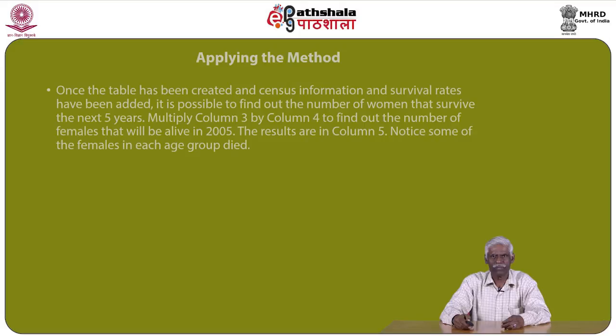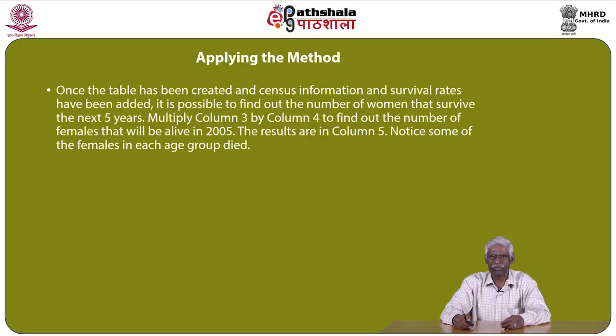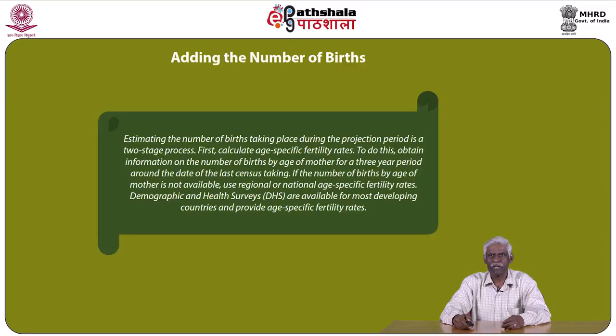Next, 5-year survival rates are added to the table as shown in column 4. Once the table has been created with census information and survival rates, it is possible to find the number of women surviving in the next 5 years. Multiply column 3 by column 4 to find the number of females alive in year 2005. The results are in column 5. Note that some females in each age group are no longer alive.